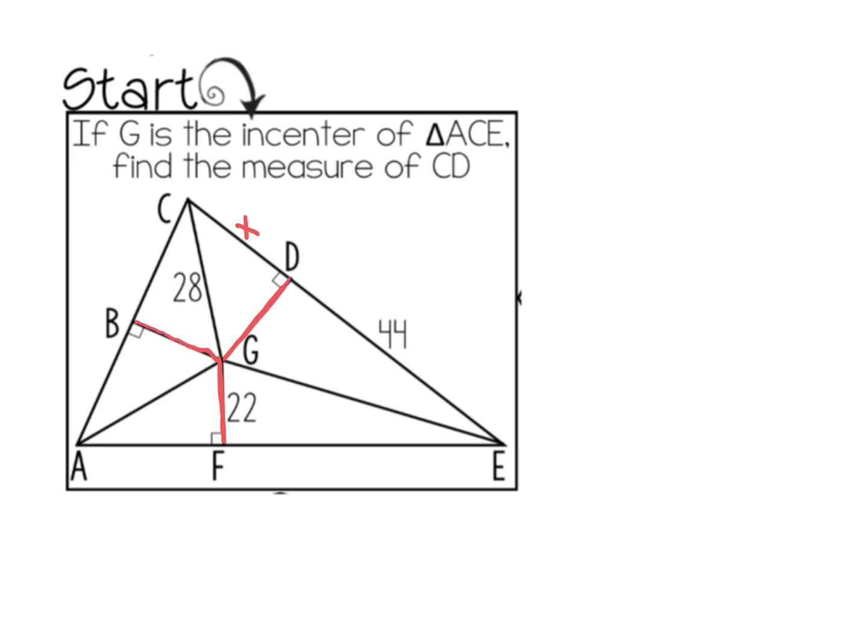So what I do notice is if this is 22, so is this, and so is this, right? Because it's equidistant from the sides. So really what we end up getting here is a right triangle that looks something like this. So this is D, this is C, this is G. We know this is 22, this is 28, I want to solve for CD.